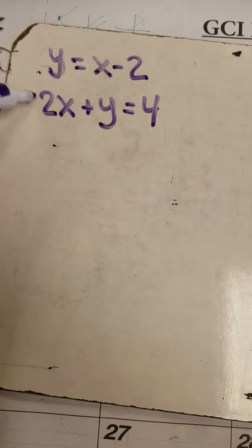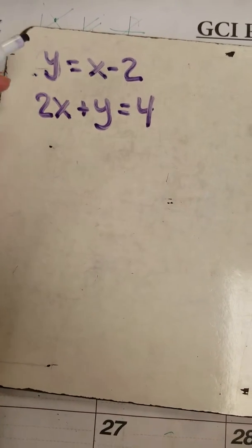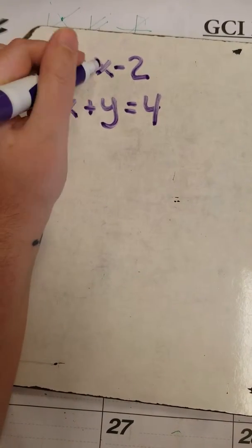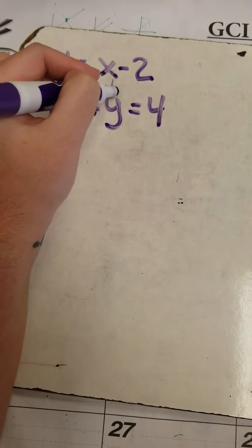So y is already solved for. It already tells me that's x minus 2. All I'm going to do is replace y with what it tells me y is. This is just going to replace this.